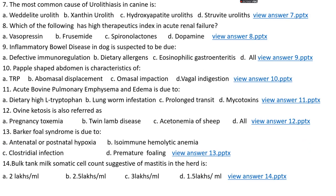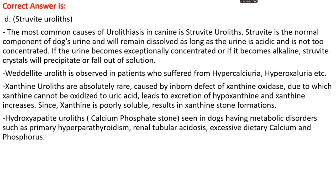Question number 7. The most common cause of urolithiasis in canines is: options A, oxalate urolith; options B, xanthine urolith; option C, hydroxyapatite urolith; options D, struvite urolith. The right answer is option D, struvite urolith. Struvite is a normal component of dog urine and remains dissolved as long as urine is acidic and not too concentrated. If urine becomes excessively concentrated or alkaline, struvite crystals precipitate and fall out of solution, causing struvite urolith in dogs.